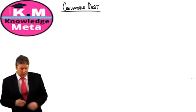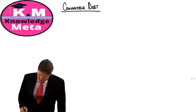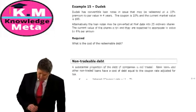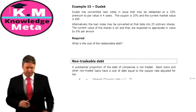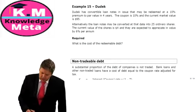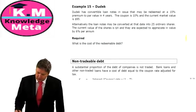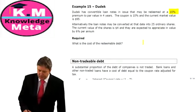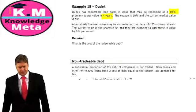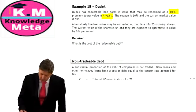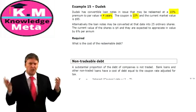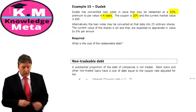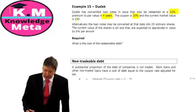Let's look at Example 15, Dudek. Dudek has convertible loan notes that may be redeemed at a 10% premium to par value in four years. The coupon is 10%, and the current market value is $95.